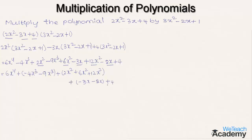Simplifying: 6x⁴, then minus 4x³ minus 9x³ equals minus 13x³, then 2x² plus 6x² is 8x², and 8x² plus 12x² is 20x². The x terms: minus 3x minus 8x equals minus 11x, plus 4. This process of multiplication is called the horizontal method.